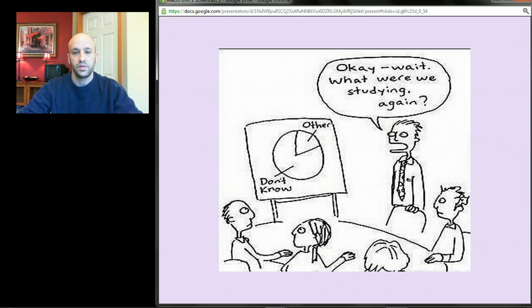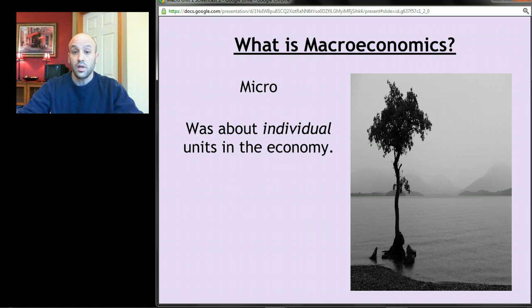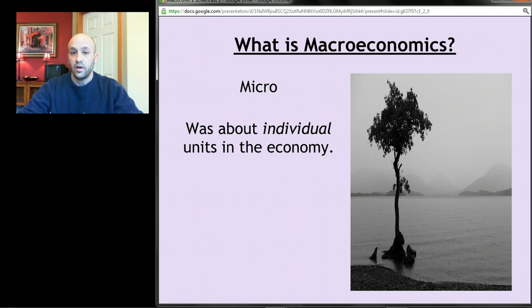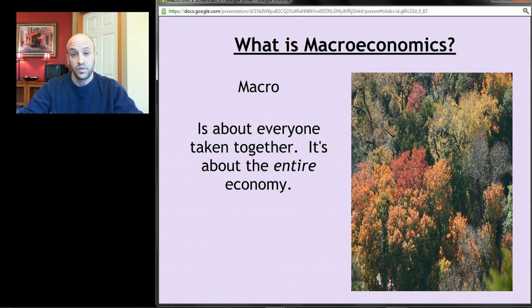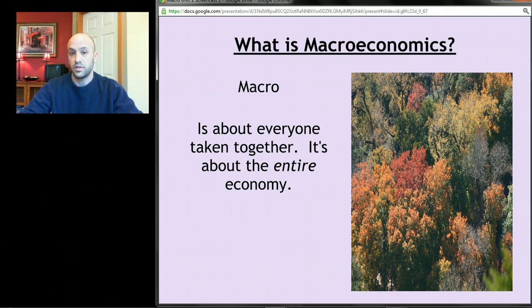First, let's talk about what microeconomics is versus macroeconomics. Microeconomics was about individual units in the economy. In the forest and the tree analogy, microeconomics would be the trees and macroeconomics would be the forest. Macroeconomics is about everyone taken together — it's about the entire economy, not just little units within the economy.